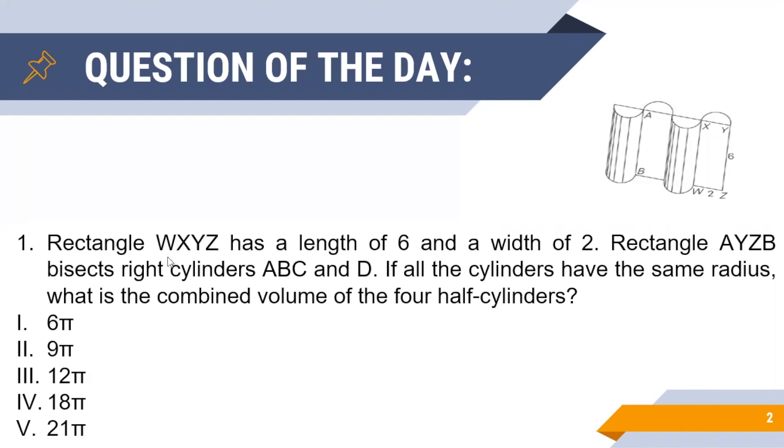In this question, we are given that rectangle WXYZ has a length of 6 and a width of 2. Next, we are given that the rectangle AYZB bisects right cylinders ABC and D. It is also given that all the cylinders have the same radius, and we are asked to find the combined volume of the four half cylinders.